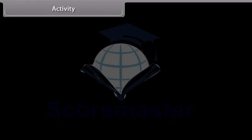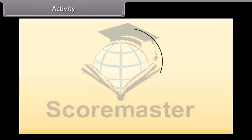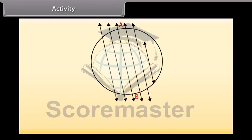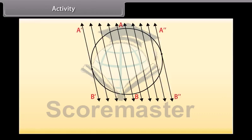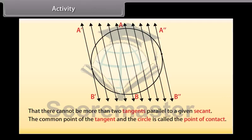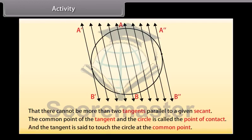To understand more about tangent, let's do an activity. Draw a circle and a secant AB of the circle. Now on both sides of the secant draw various lines parallel to it. We will find that the length of the chord cut by the lines will gradually decrease and it becomes zero on both sides of the secant. The positions AB′ and AB″ of the secant are the tangents to the circle parallel to the given secant AB. There cannot be more than two tangents parallel to a given secant. The common point of the tangent and the circle is called the point of contact, and the tangent is said to touch the circle at the common point.